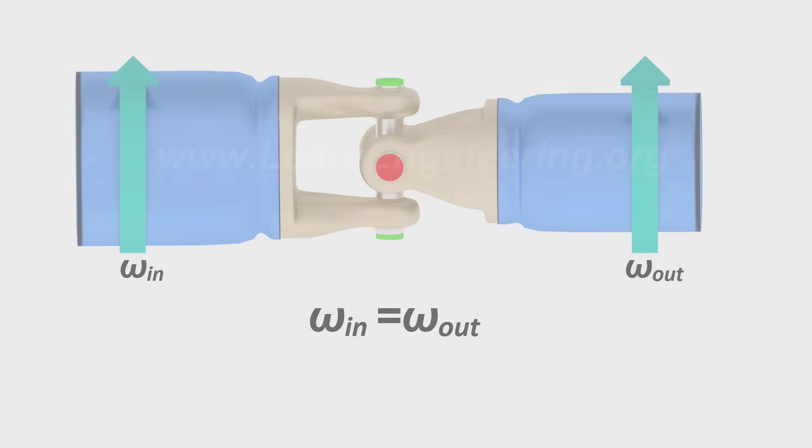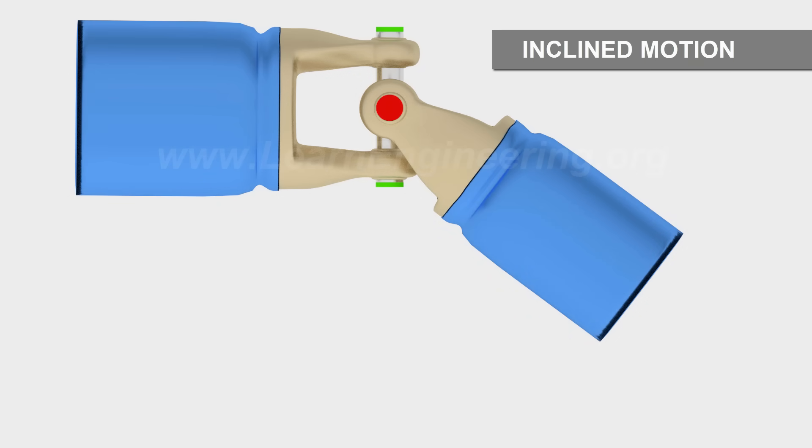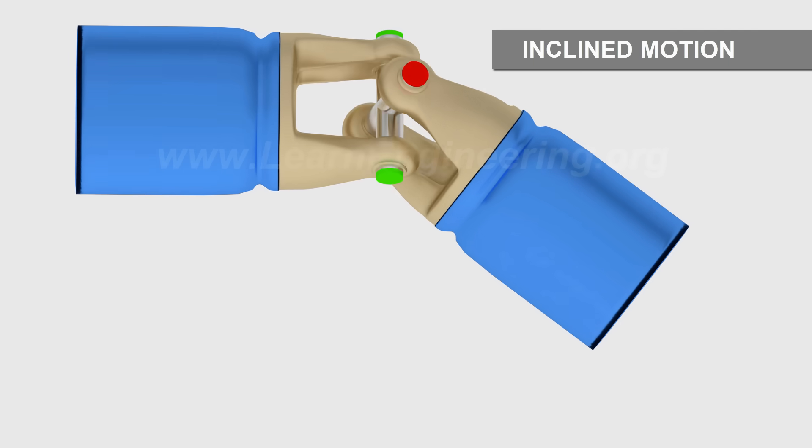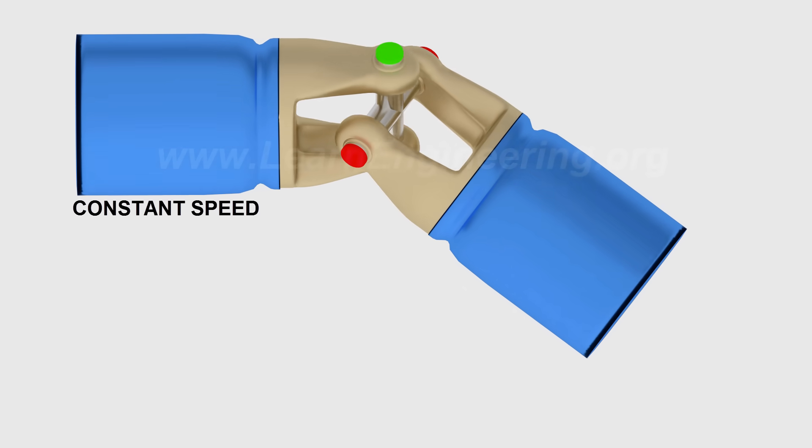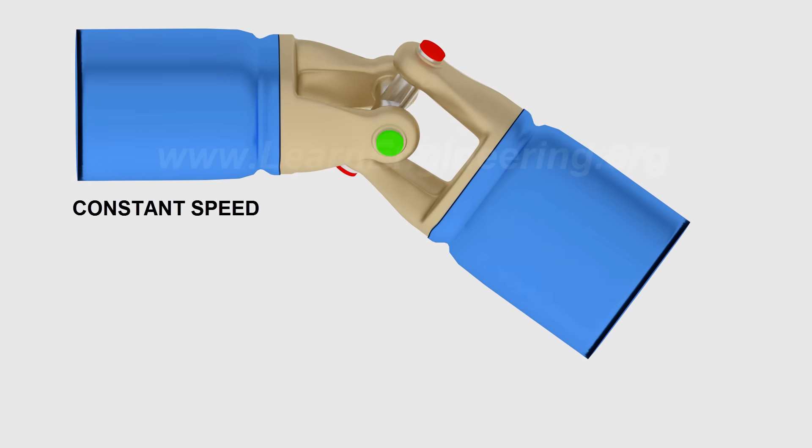Now, let's see what happens if the axes are at an angle. Assume that the input shaft is moving at a constant speed. Here, the motion is quite different.